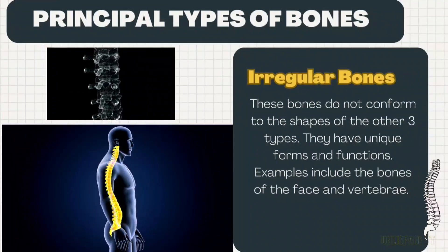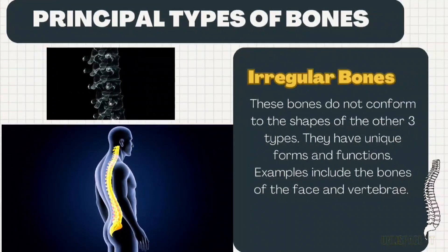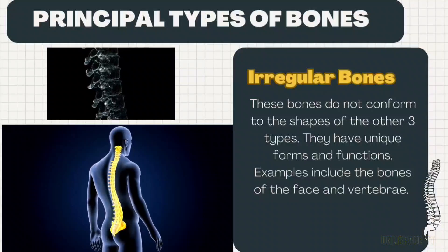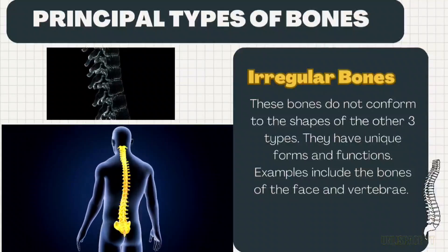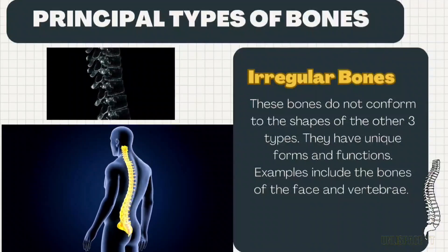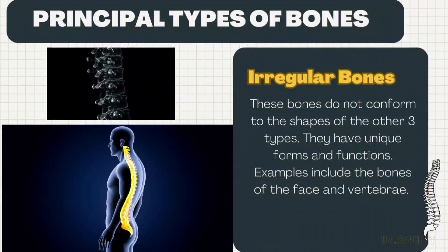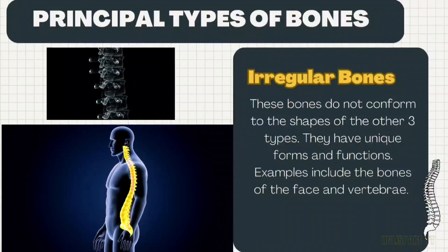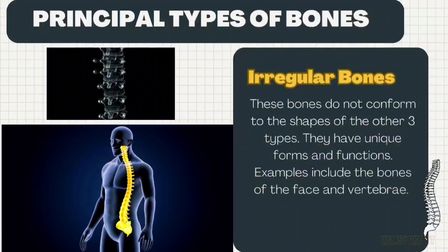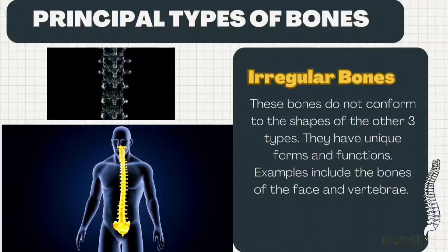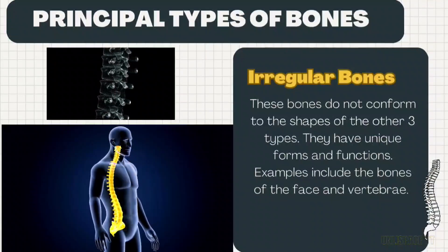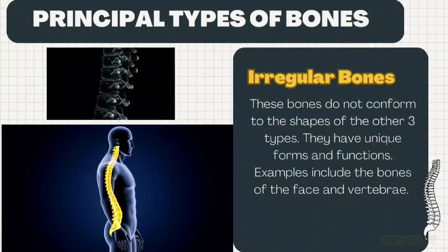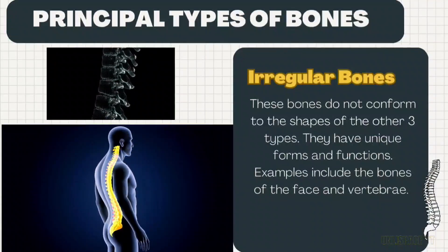Irregular bones do not conform to the shapes of the other three types. They have unique forms and functions. Examples include the bones of the face and vertebrae.